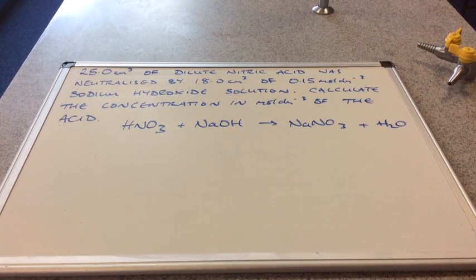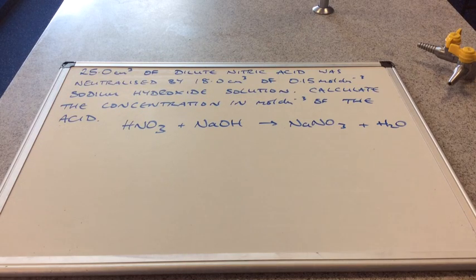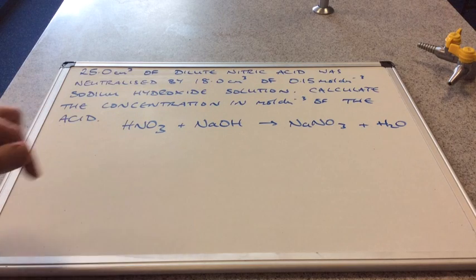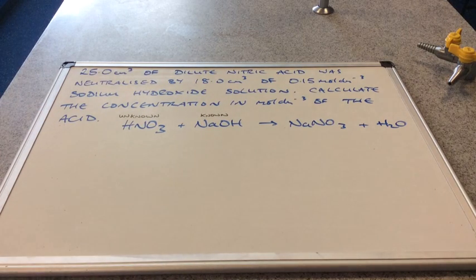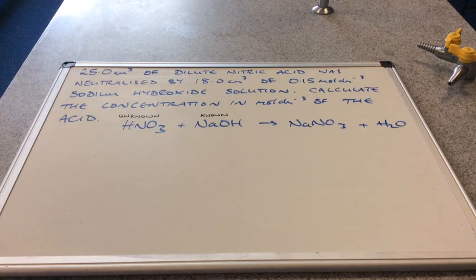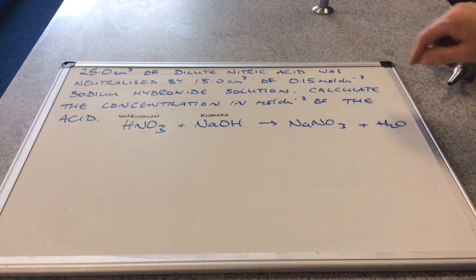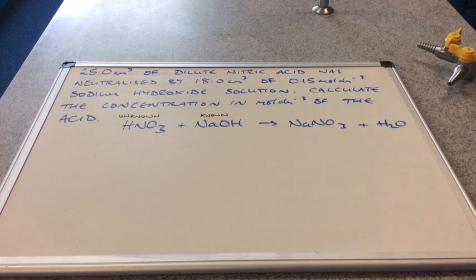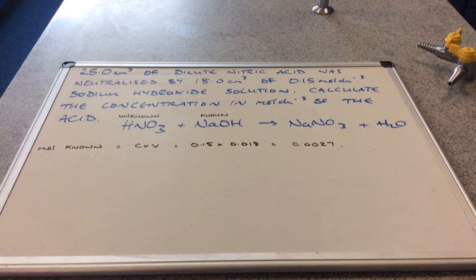We'll start off with a simple type of question. We've got information about a titration experiment — the reaction between a dilute acid and a dilute alkali — and we have to find the concentration in moles per decimetre cubed of the acid. We're also supplied with the balanced chemical equation. The first thing I've done is identified the known and unknown substances. The nitric acid is our unknown chemical because we need to calculate its concentration, and the known substance is sodium hydroxide because we're told its volume and concentration.